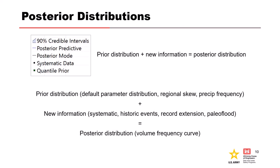When we start a frequency analysis, what we end up with to get our posterior distribution is our prior distribution plus our new knowledge. Our prior distribution is comprised of our default parameter distribution, regional skew, and precip frequency. New information such as systematic data, historic events, record extension, paleo flood information, which gives us our final estimate or posterior distribution.